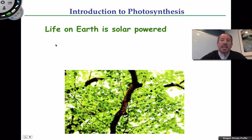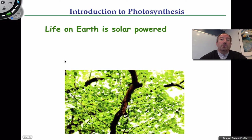Most life on the earth is solar powered. When you look at a tree, obviously it's powered by the sun. But you might think you're not powered by the sun — but you are, because indirectly you're eating organisms, plants, or other animals that give you energy that came from photosynthesis. So most of life on the earth is solar powered ultimately, directly or indirectly.